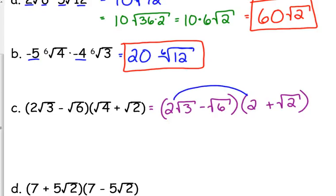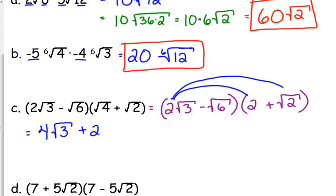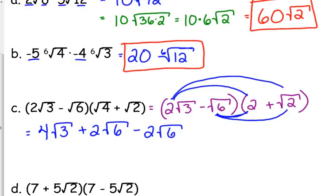We are going to multiply our first two terms — what we just did with multiplying applies right here. So 2 square roots of 3 times 2 is going to be 4 square roots of 3. The outside: the coefficient in front is 2, and the square root of 3 times the square root of 2 is the square root of 6, giving us positive 2 square roots of 6. The inside gives us negative 2 square roots of 6. And the last is a negative times a positive, so that is a negative — and the square root of 6 times the square root of 2 is the square root of 12.